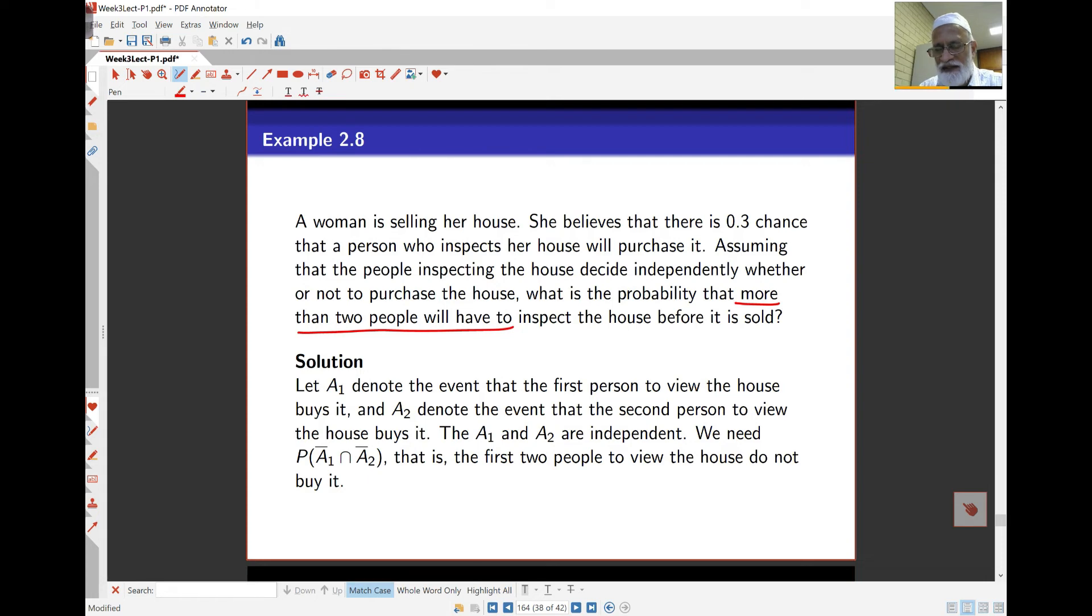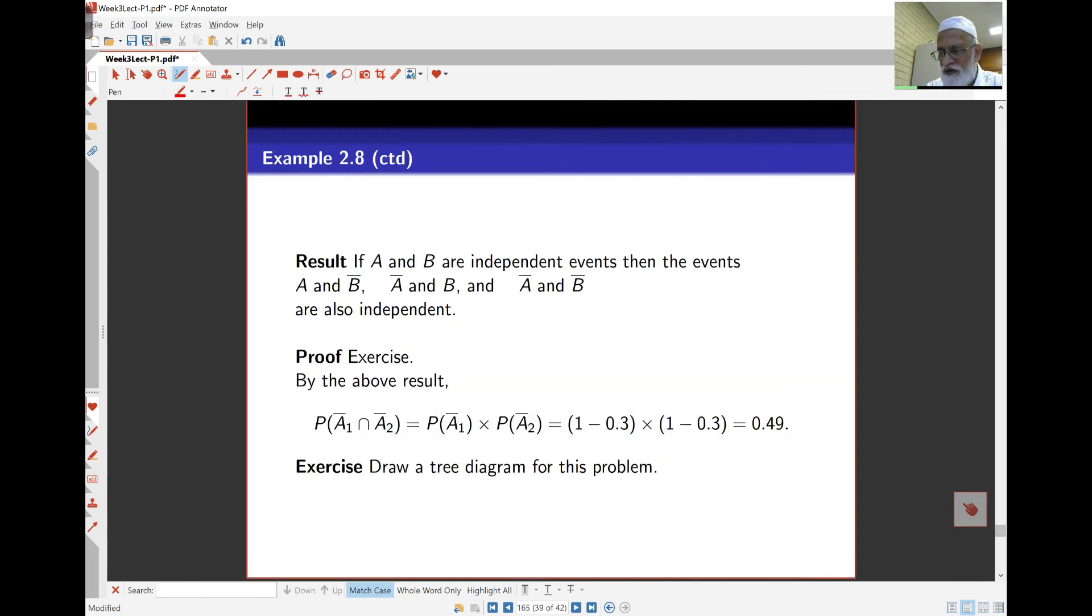So, here we've got events. A1 is that the first person who views the house will buy it. And A2 is that the second person to view the house buys it. And A1 and A2 are independent as we have been told. So, what we need to do is work out, essentially, when we say that more than two people will have to inspect the house before it's sold, what we're saying is that the first person doesn't buy it and the second person doesn't buy it. So, that's what we're looking at: A1 complement intersect A2 complement.